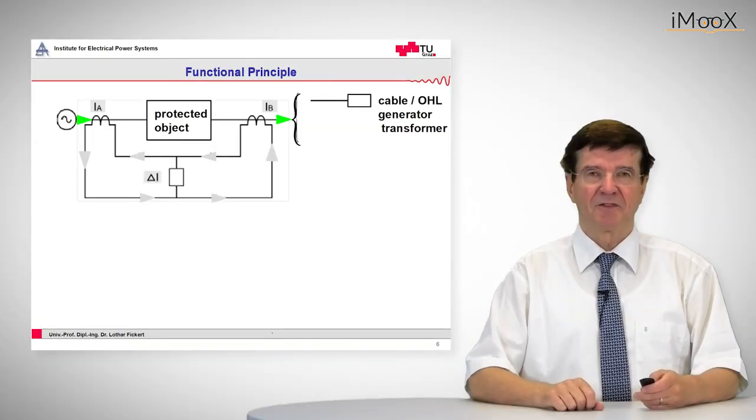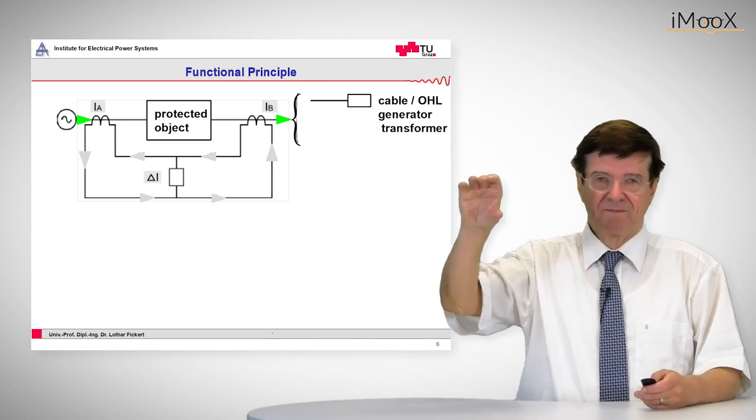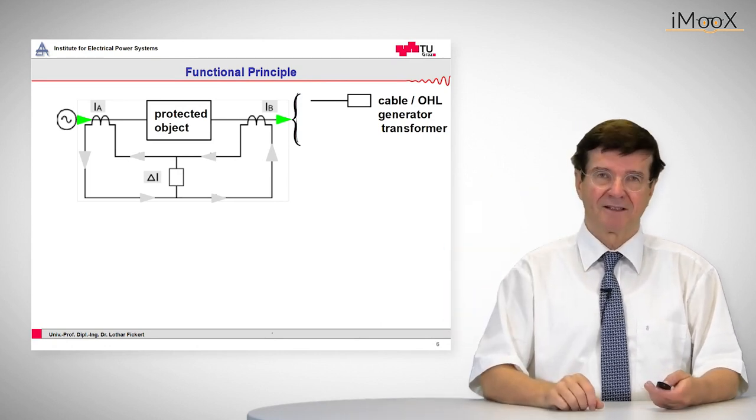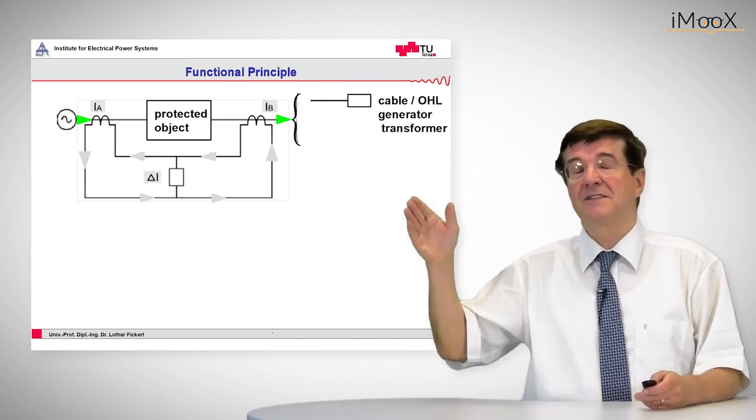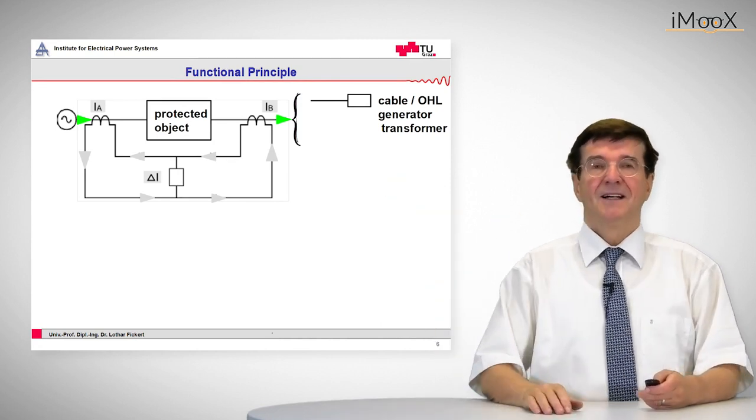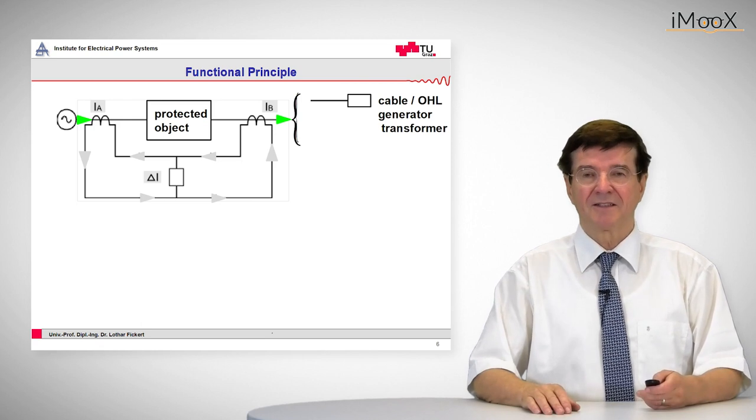Now let's see what happens if a current is flowing through. So the current enters the protected area on our left side and leaves it on the right side. And now let's see what happens to the secondary currents.